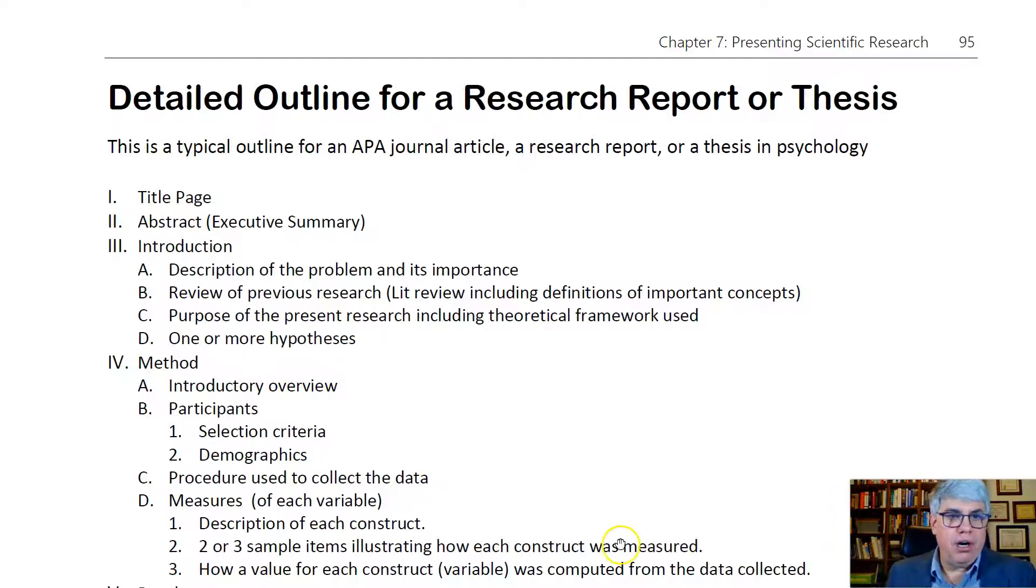We start off in standard APA format where we'll have a title page and an abstract. Now, if you're doing a research report for an outside organization, you might want to call it an executive summary. That sounds more inviting than an abstract, but it's the same thing. You're going to summarize everything, including the methods and the results.